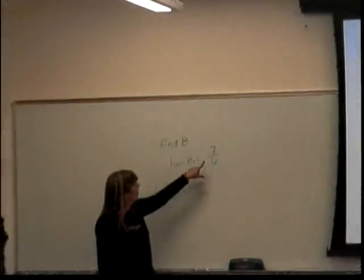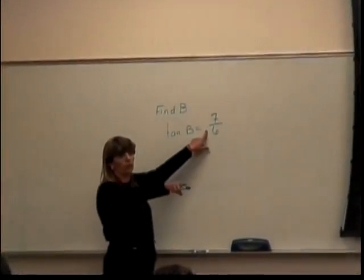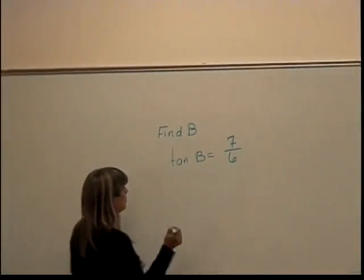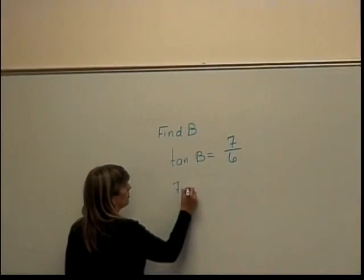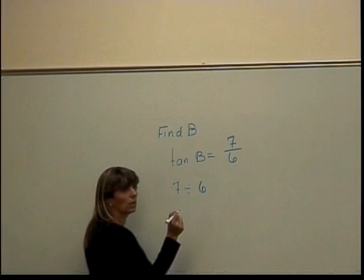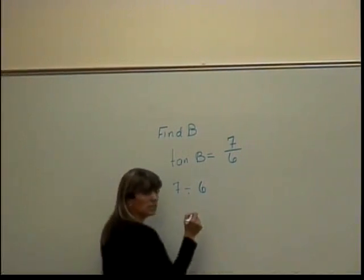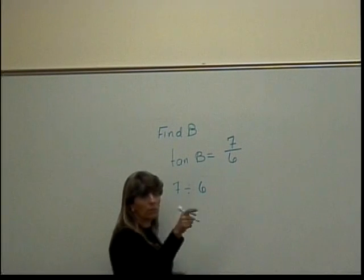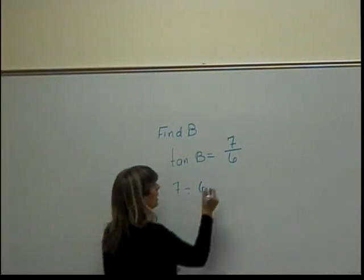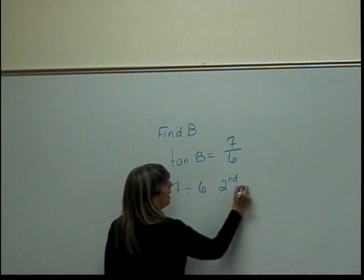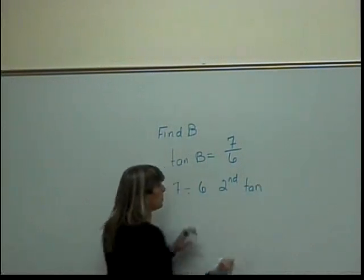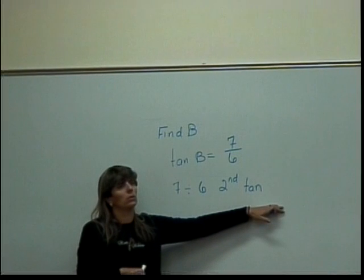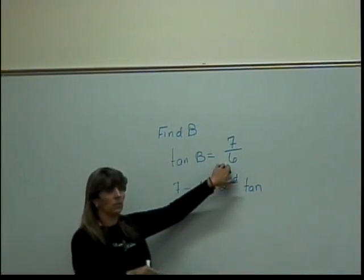The way it's going to work is, for those of you who have the standard calculators, you're going to type 7 divided by 6, and then hit second or shift — there's a button up at the top on the left — second, and then the tangent. What this does is it gives you the angle that made this answer.